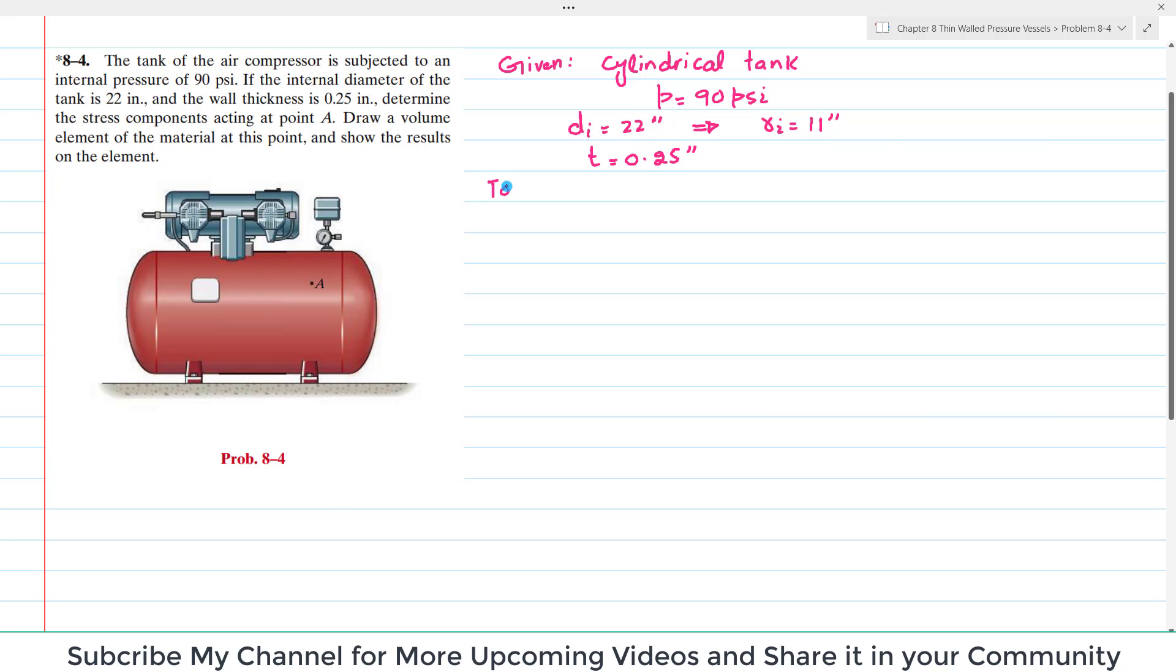You have been asked to find the stress components acting at point A. By stress component we mean sigma 1 and sigma 2. Sigma 1 is hoop stress, and sigma 2 is longitudinal stress.